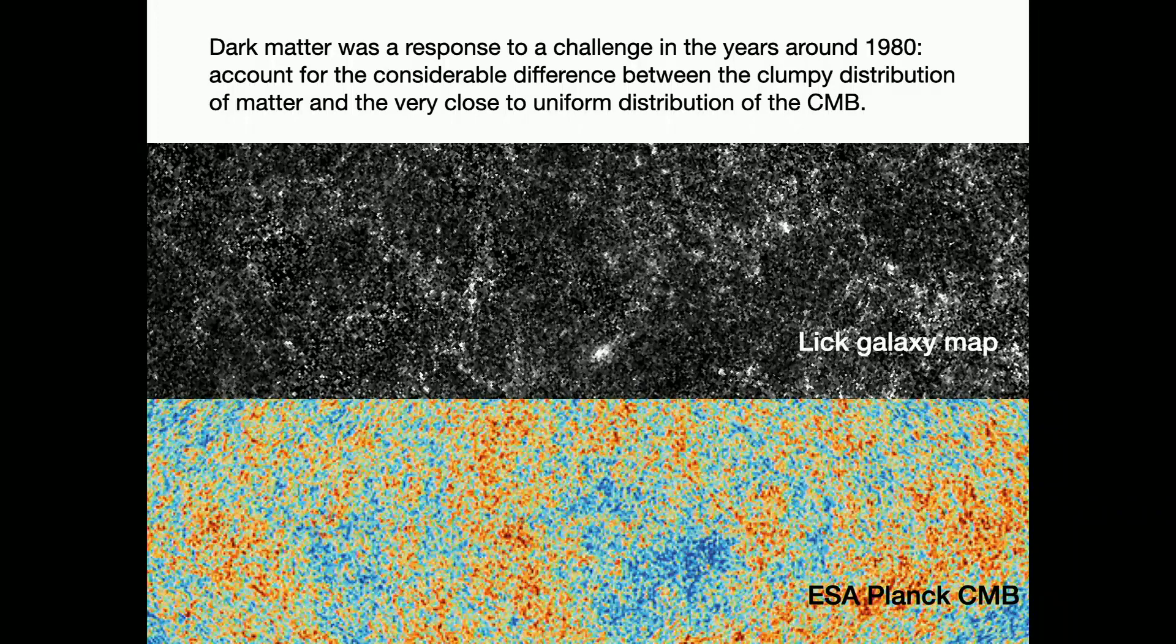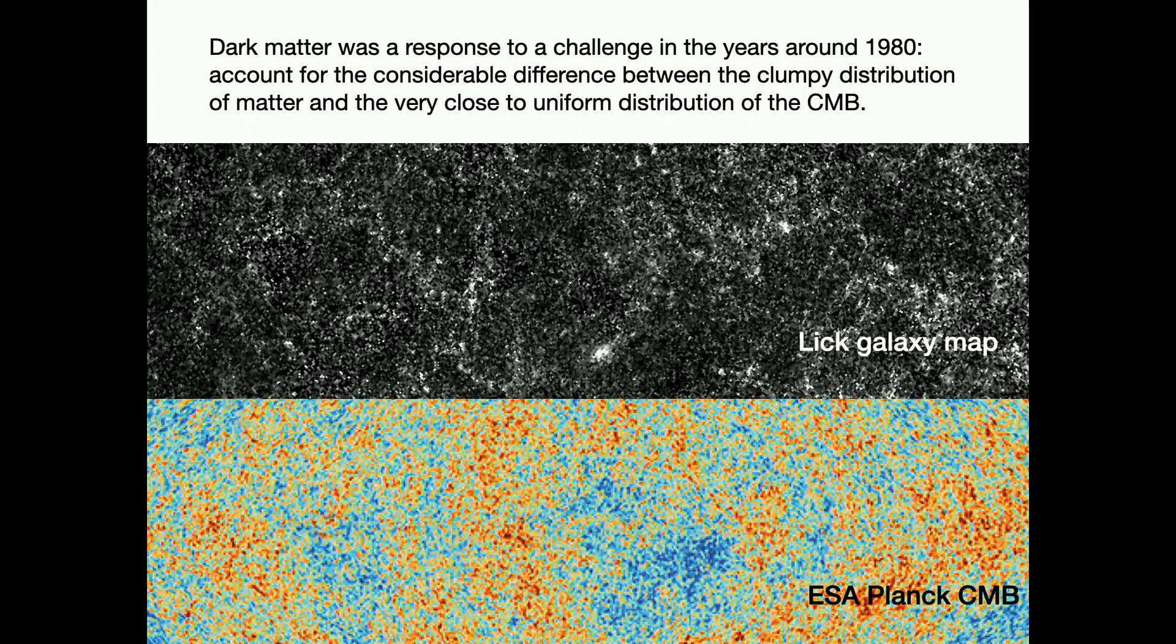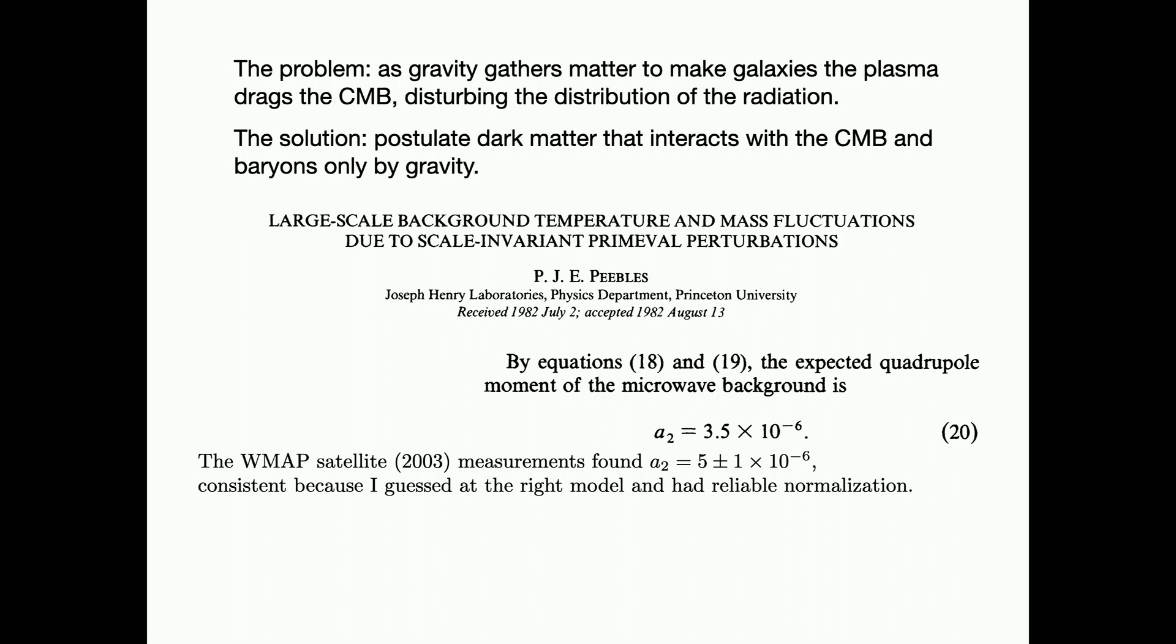The free electrons interact with radiation by Thomson scattering. The free electrons interact with atomic nuclei by Coulomb scattering. The result is that radiation, electrons, and ions act as a fluid with viscosity. That fluid has a pressure, and as the universe expands, the fluid shakes like a bowl of jelly. It has a boundary condition at redshift of about 1,000.